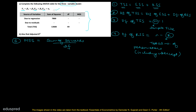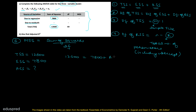Let's start with the first column. We are given that TSS, the total sum of squares, is 12600. And this 7800 given here is ESS — the source of variation is due to regression, meaning the variation is explained. So ESS is equal to 7800. Now we have to find the residual sum of squares using rule one: TSS equals ESS plus RSS. So 12600 equals 7800 plus RSS, giving RSS equal to 12600 minus 7800, which is 4800.